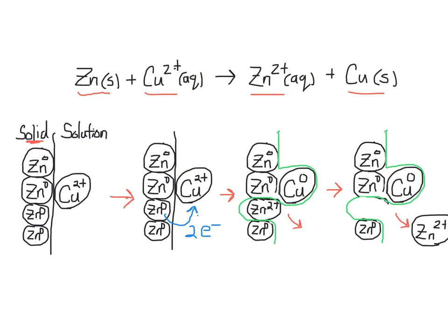Once they bump into the surface, two electrons could get transferred. That is going to reduce the copper 2+ to copper 0, making it a metallic form and oxidize the zinc 2+.